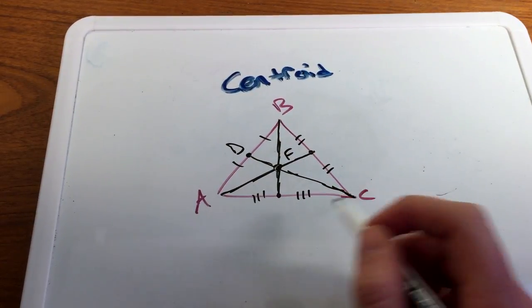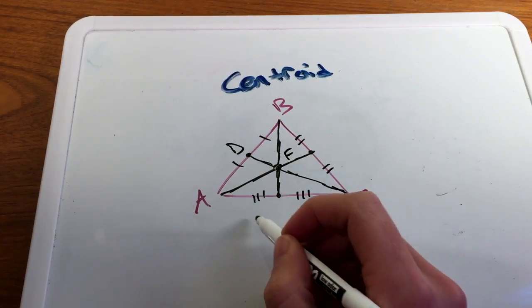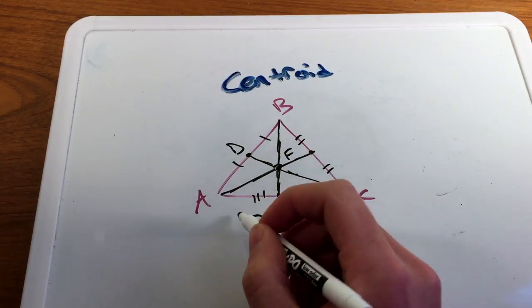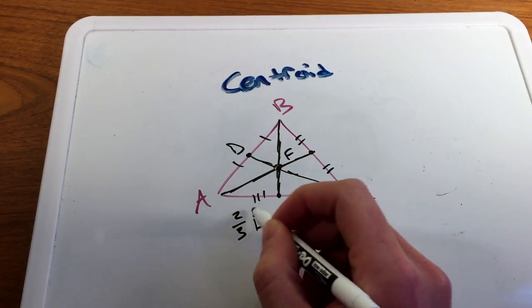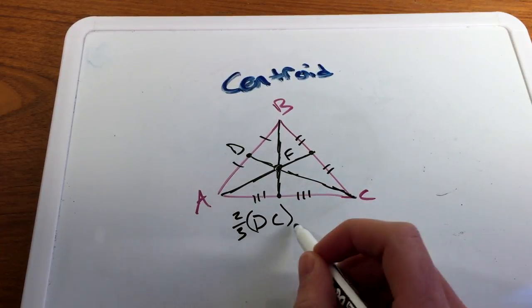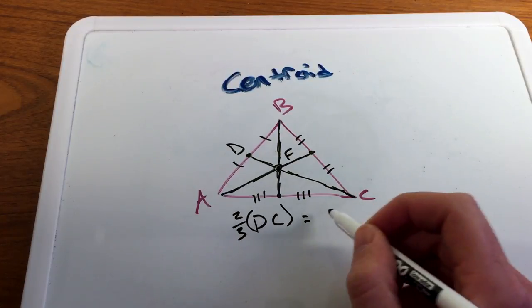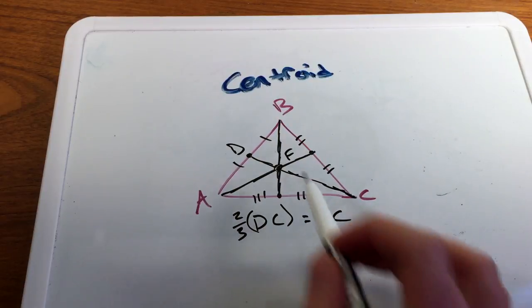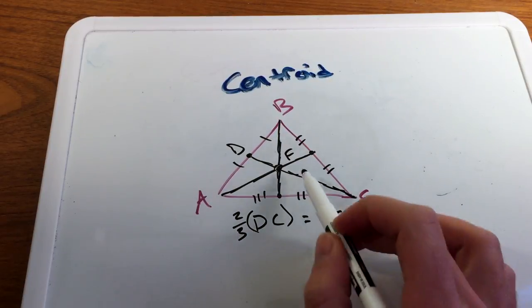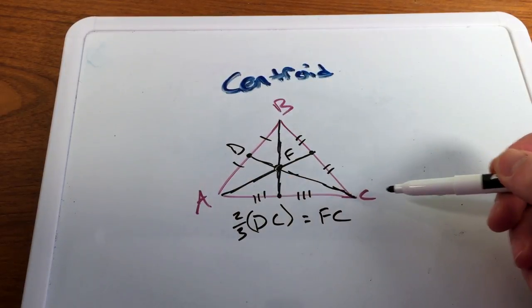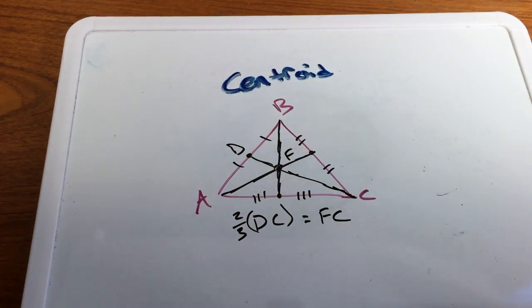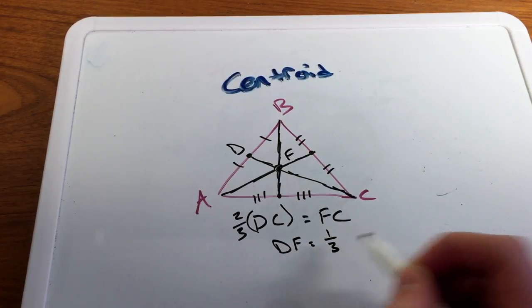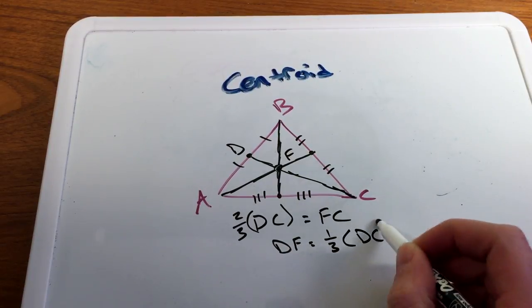And what you'll notice is that the length of DC, that overall length, if you times that by two-thirds, so again this DC is referring to length of DC, that is the length of FC. So the length of DC times by two-thirds is the length of FC. FC is two-thirds length of the total overall length of DC, which then you can also say that DF is equal to one-third the length of DC as well.